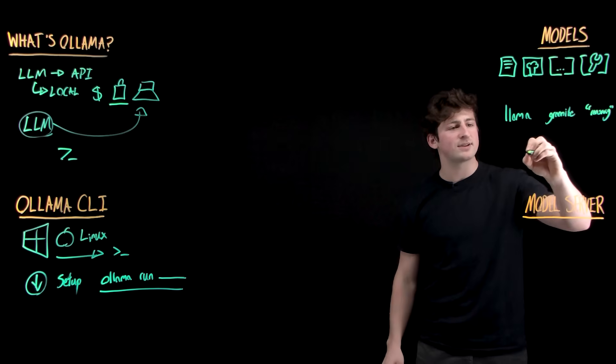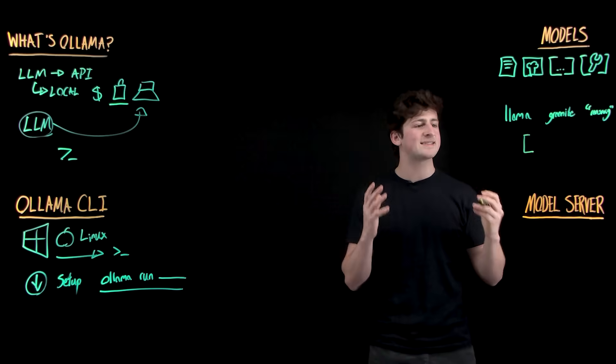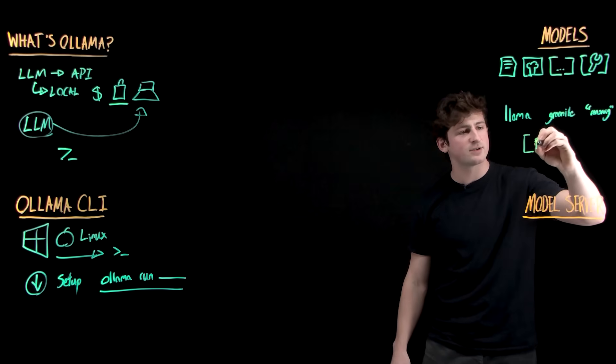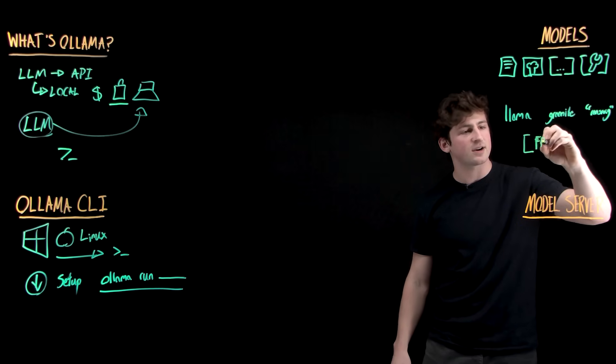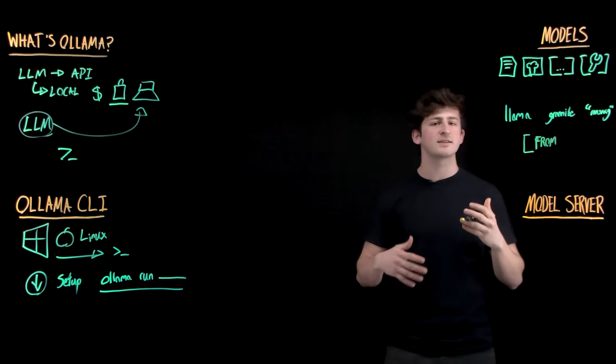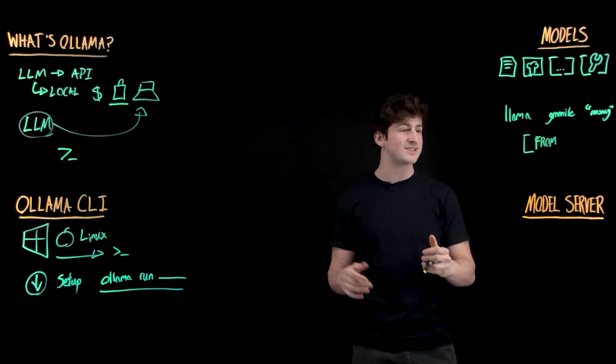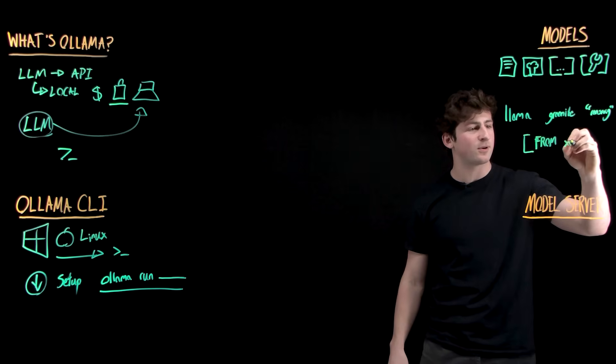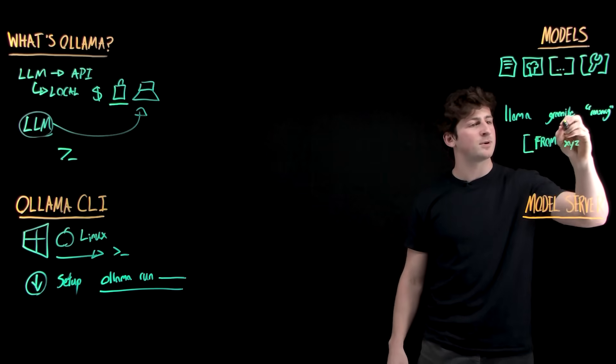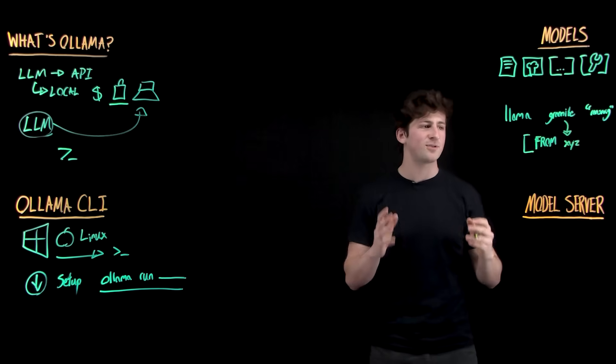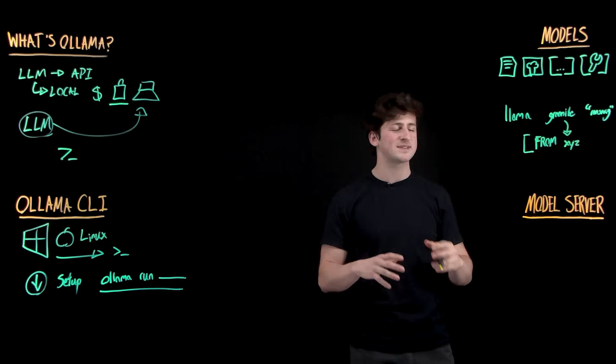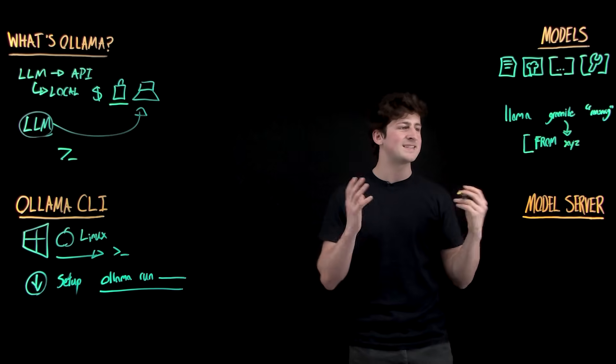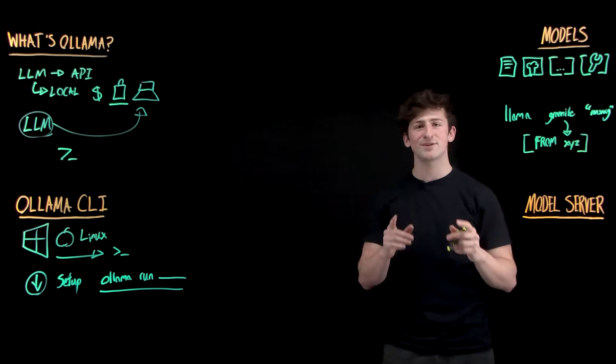Beyond just using the model catalog, you can actually take advantage of what's known as the OLAMA model file to essentially just how Docker has abstracted the complexities of containers. We're using a model file to abstract the complexities of models to be able to import from Hugging Face, for example, or to start from a model that you already have and customize it with system prompts and different parameters to be the best model for your use cases.